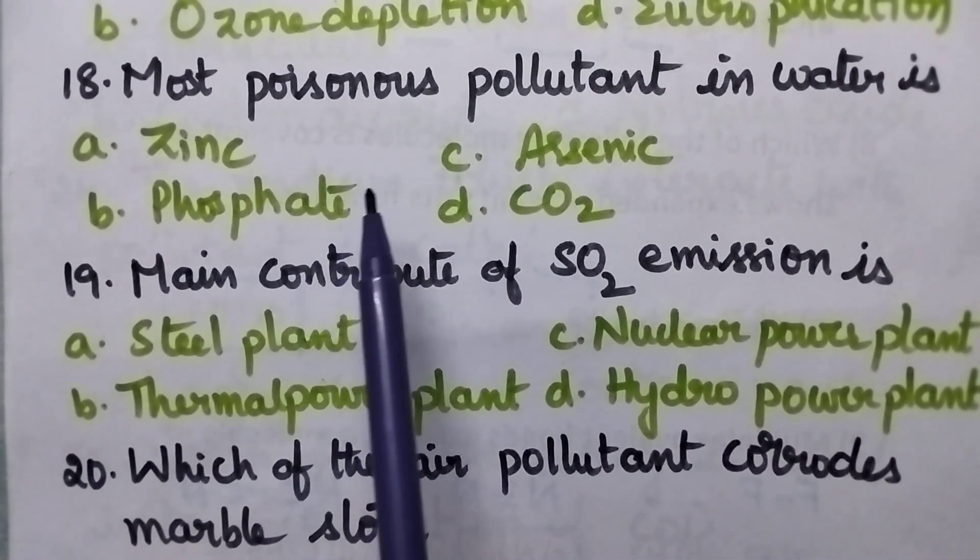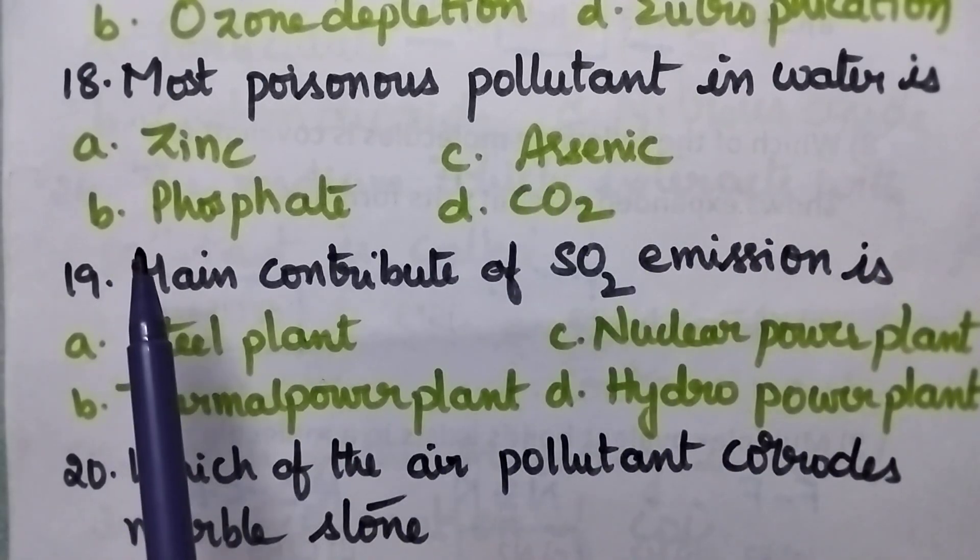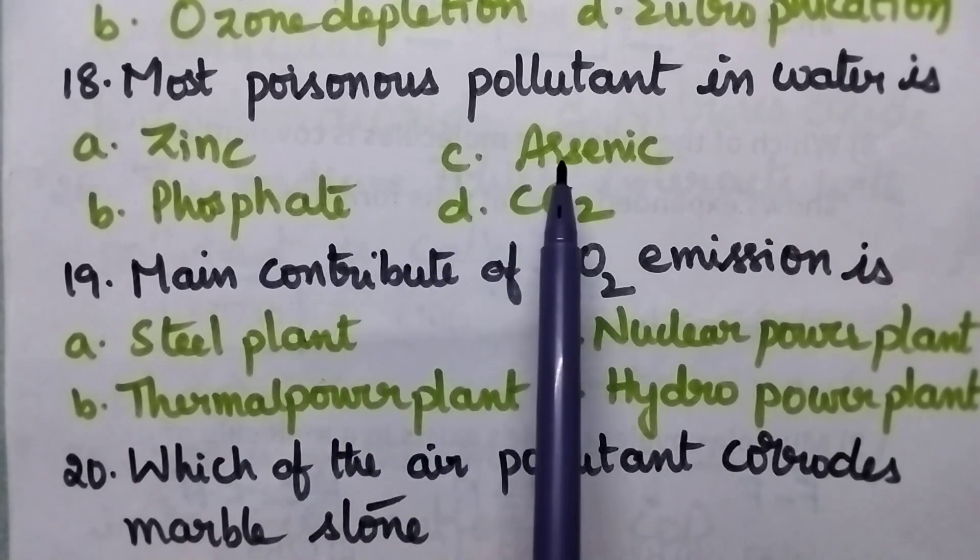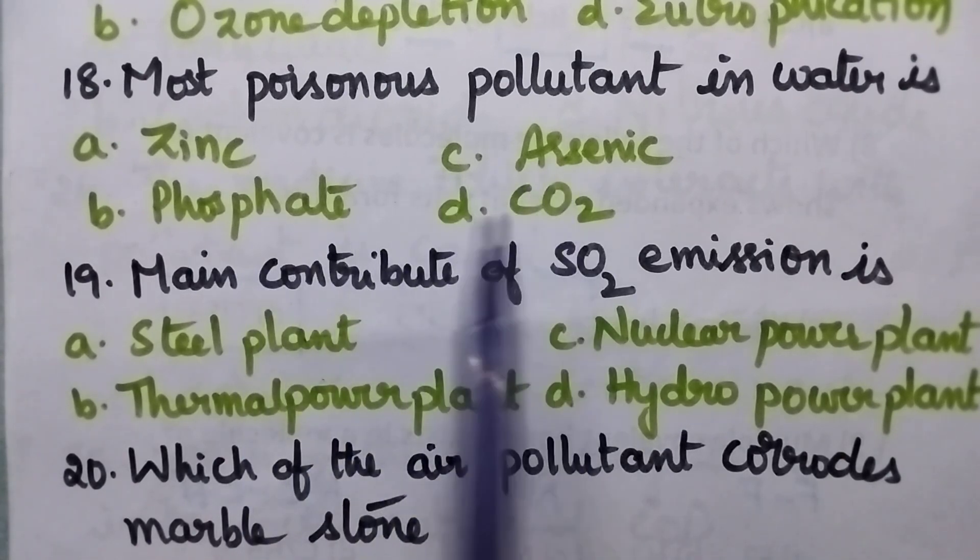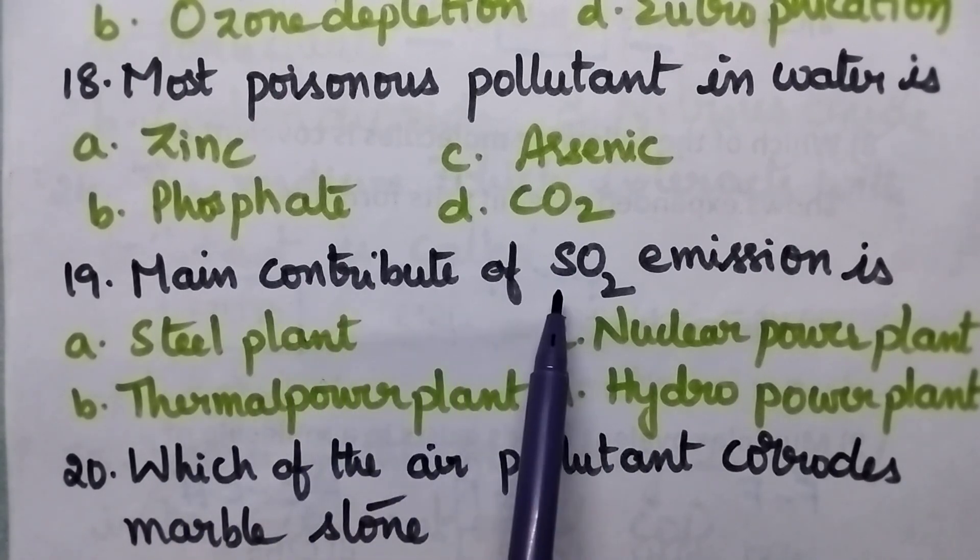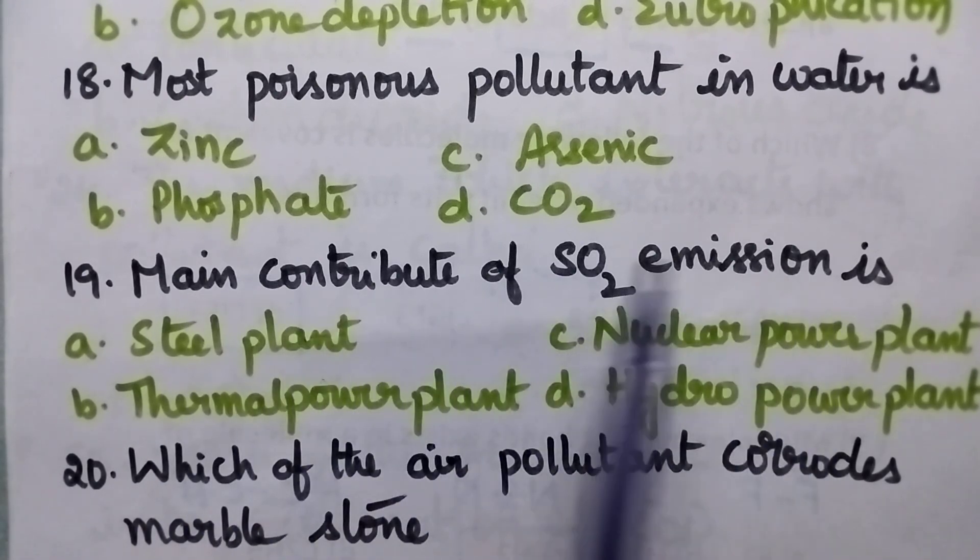Most poisonous pollutant in water is A: Zinc, B: Phosphate, C: Arsenic, D: Carbon dioxide.